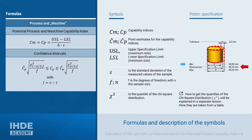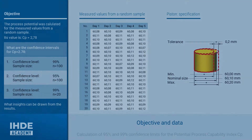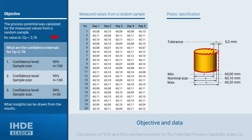As a product characteristic, we use the diameter of a piston. In a previous lesson, we already determined the process potential based on raw data, so we assume the value of the process potential CP to be 2.78. We will answer three questions: first, the confidence interval for a 99% confidence level with sample size N=100; second, the confidence interval for a 95% confidence level with the same sample size; and third, the confidence interval for a 99% confidence level but with a reduced sample size of only 20.